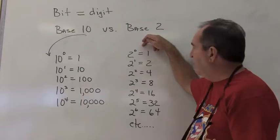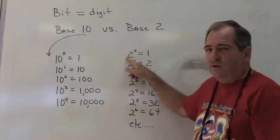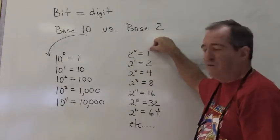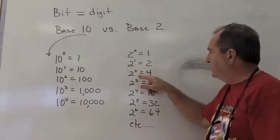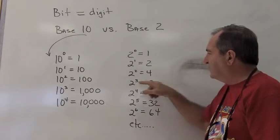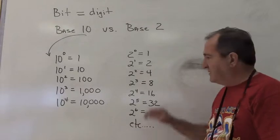On the binary system, what we have is the base is 2. We raise it to these same powers, 0, which anything to the 0 power is 1. 2 to the 1 is 2. 2 to the 2 is 4. And 2 to the 3rd is 8, and so forth. And we can keep going. This doesn't have to stop.